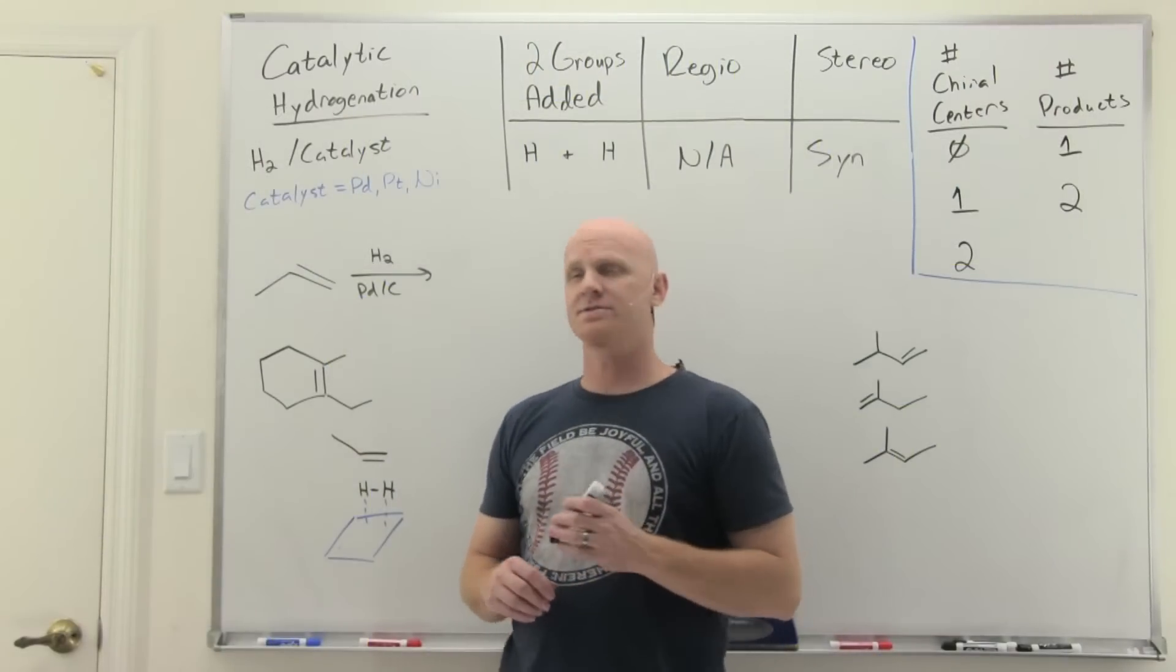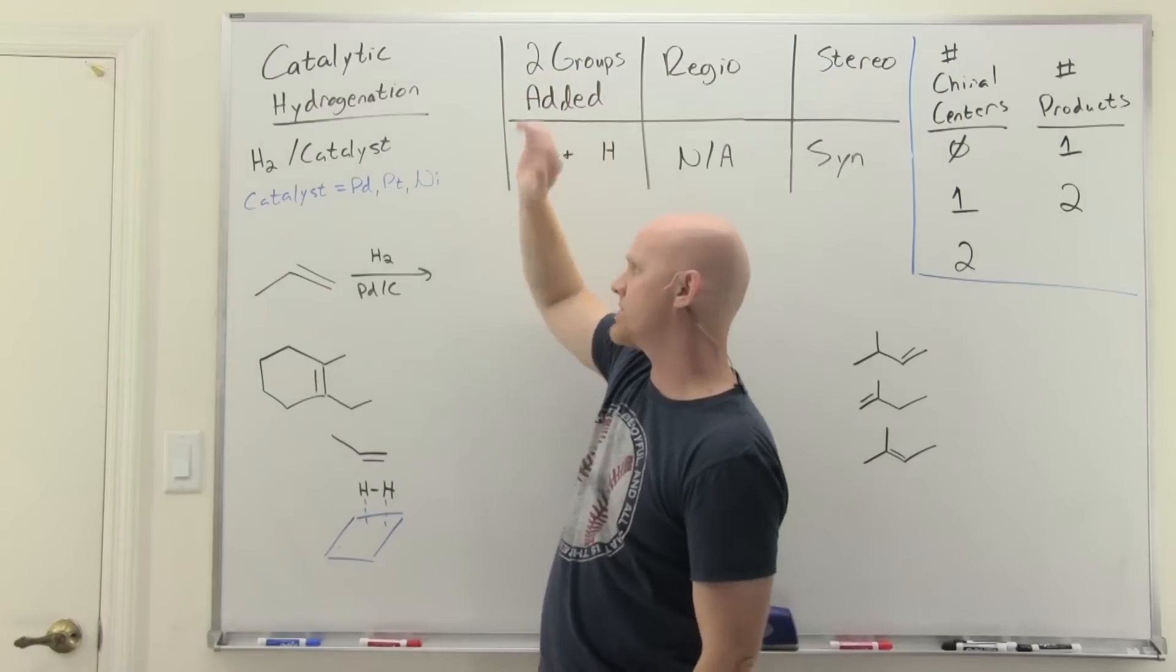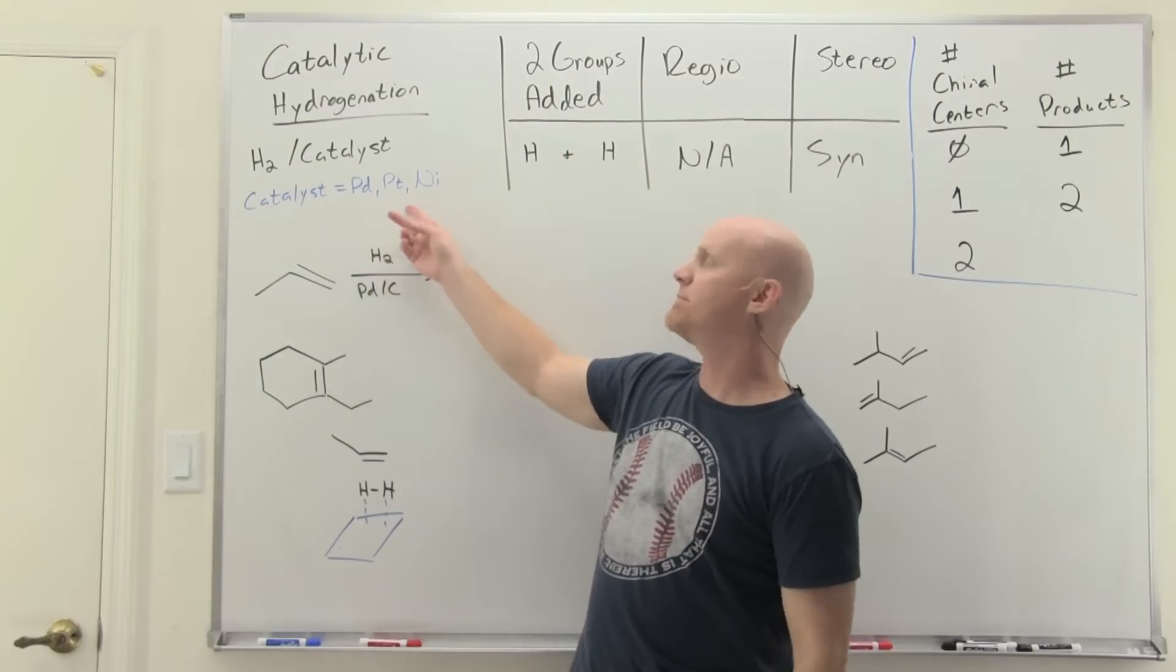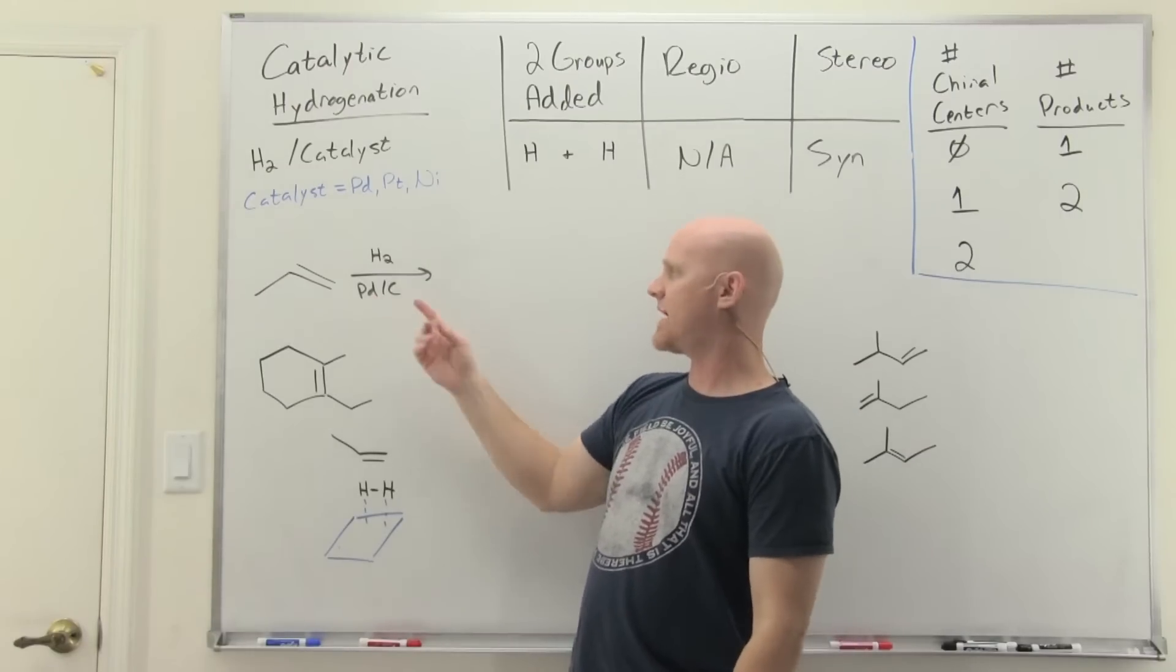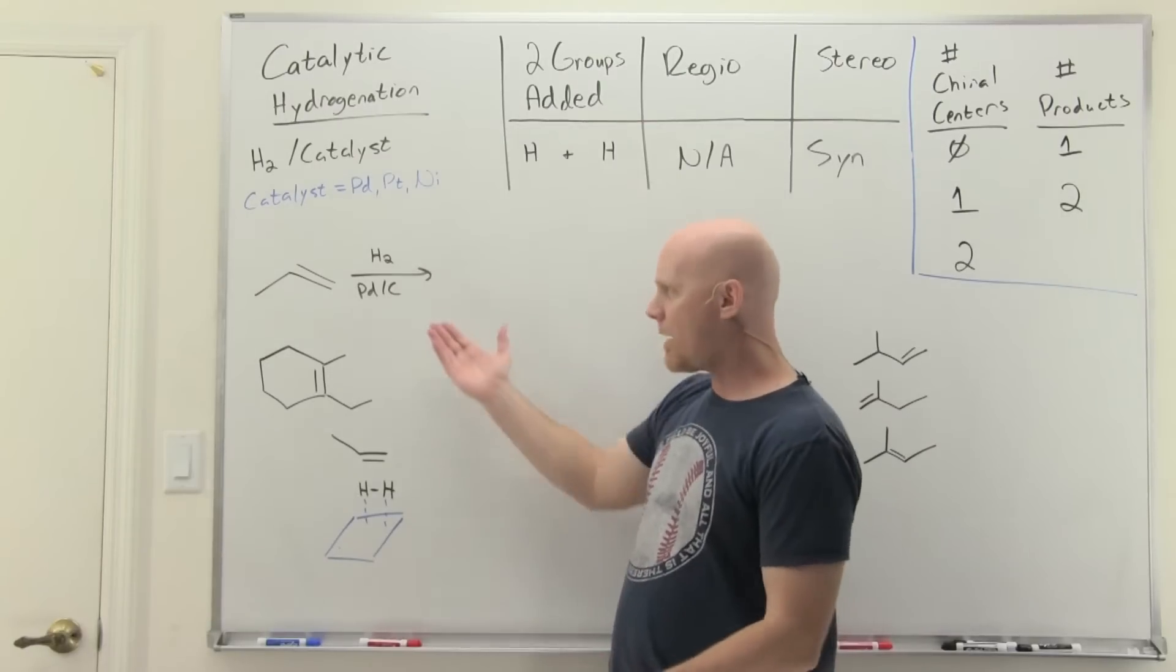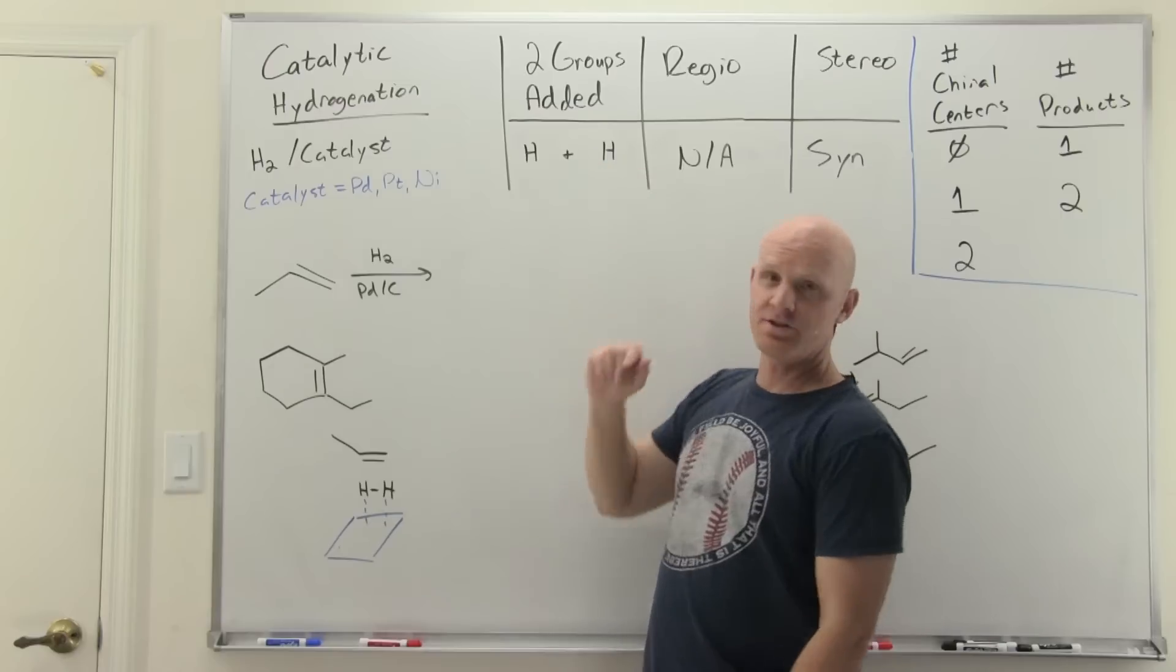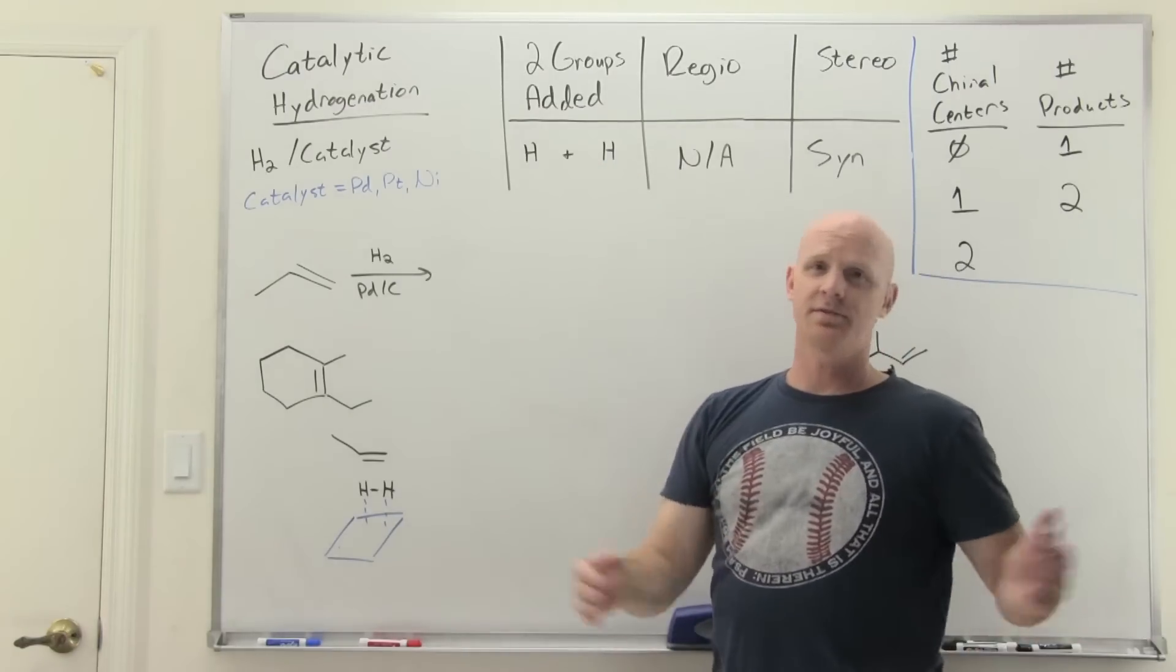Our next alkene addition reaction is going to be catalytic hydrogenation. Catalytic hydrogenation occurs when you add H2 with an appropriate metal catalyst, typically palladium, platinum, or nickel. Here we've got a common example with our palladium catalyst—that's palladium on carbon or palladium on charcoal. We're going to add an H and an H, and because we're adding two of the same thing, there is no regioselectivity to talk about.